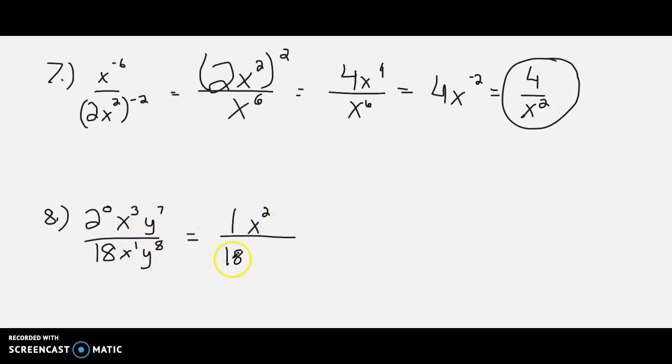Remember, 3 minus 1. We'll have a y by itself on the bottom. 7 y's on the top cancel with 7 on the bottom, leaving us with y to the 8th. You can also think of that as y to the negative 1 in the numerator, but then make it positive and put it in the denominator. Simplify this answer a little bit more. x squared over 18y for a final answer.